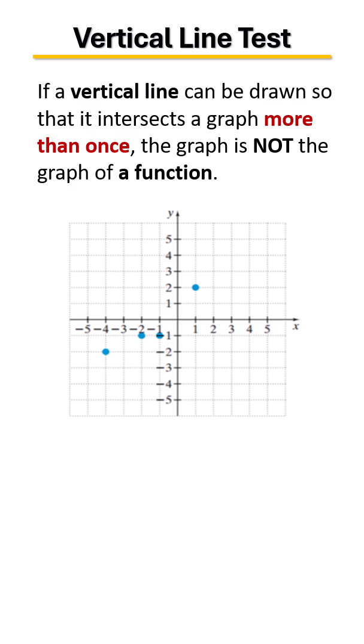We'll look at our first point. If we draw a vertical line there, we hit it once, hit it once, hit it once, hit it once. At no time in drawing those vertical lines did we intersect more than once. Therefore, since we only touched in one place, this is a graph of a function. It passes the vertical line test.